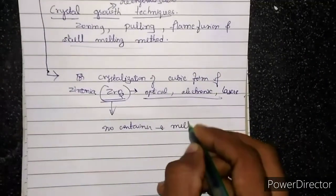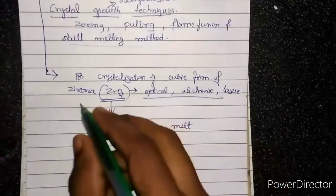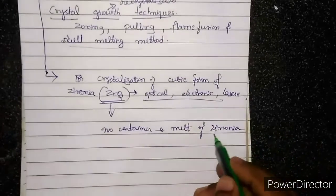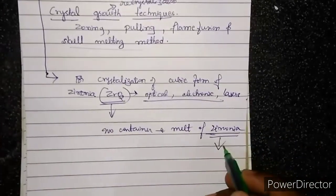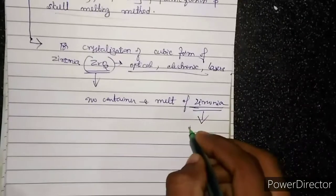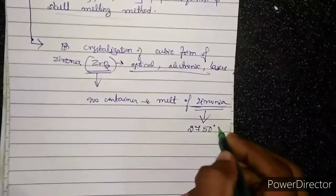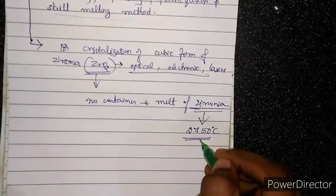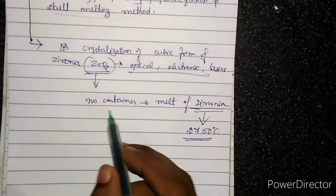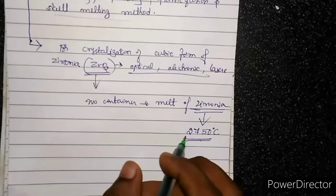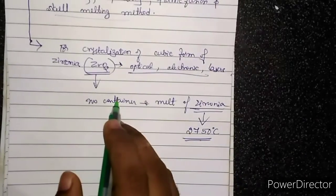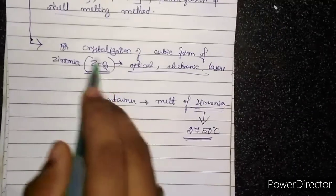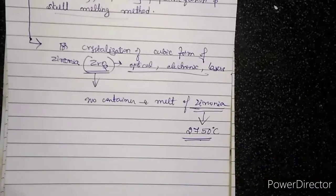We use skull melting for zirconia because practically there is no container that can hold the melt — that is, the liquid form — of zirconia. This is because zirconia has a very high melting point of around 2750°C. Due to this extremely high melting point, no container can hold the zirconia melt, so we must use the skull melting method to prepare the purest form of zirconia.